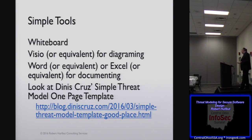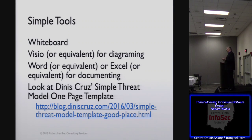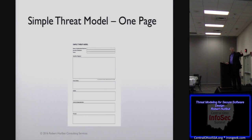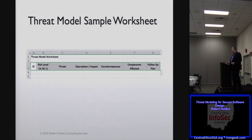Simple tools — I like a whiteboard. To document it, you can use Visio, Word, Excel, and so on. There are also a few other tools out there. There's one from Microsoft which I have a reference later in the deck. Dennis Cruz just came out with a simple one-page threat model just to get you started — it mentions your diagram, threats, and so on. I also like an Excel spreadsheet I've used with a few customers: just start documenting your risk level, which we'll talk about later, the threat, description, countermeasures, and then the follow-up.